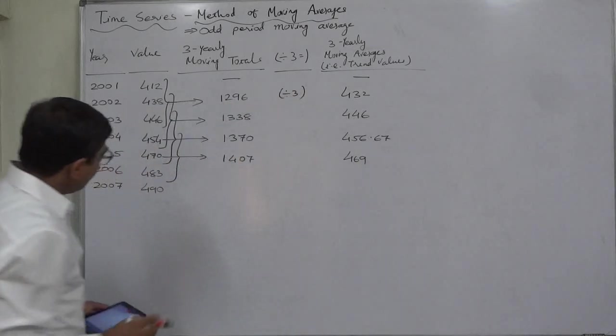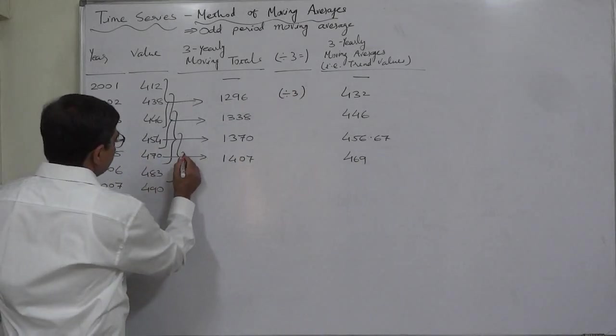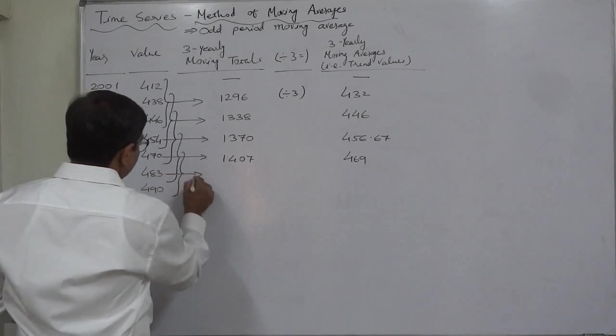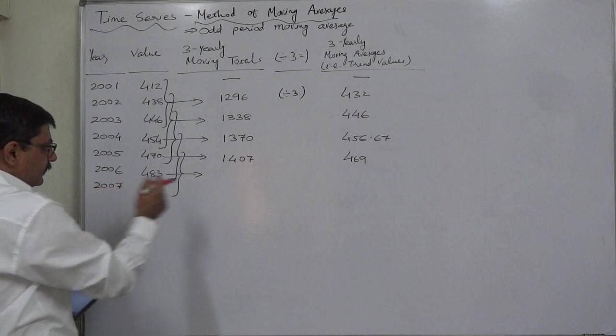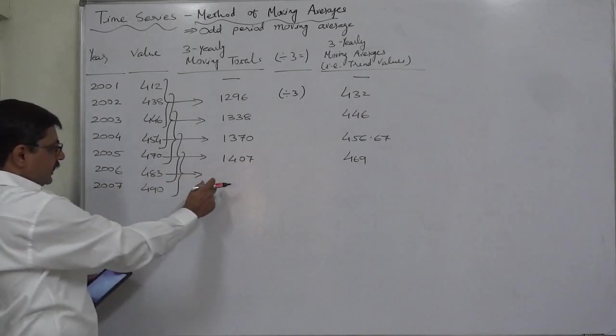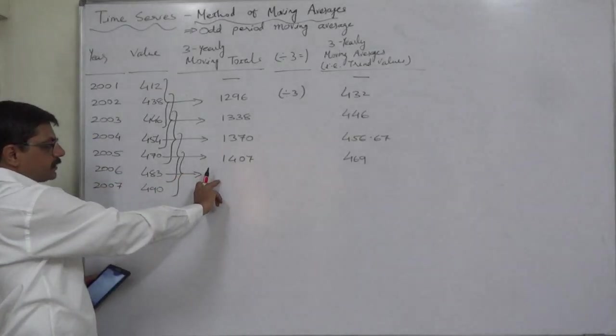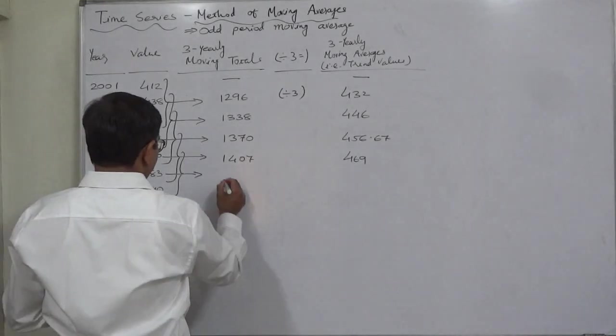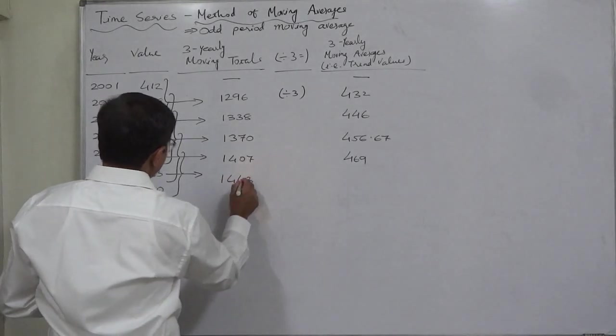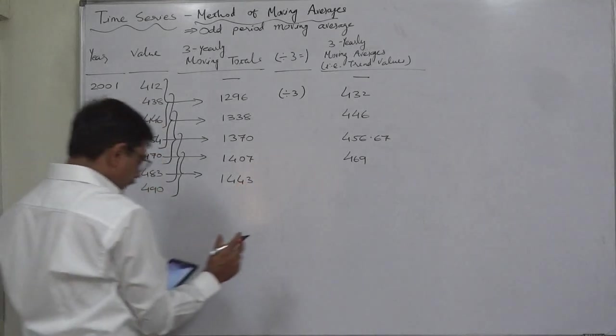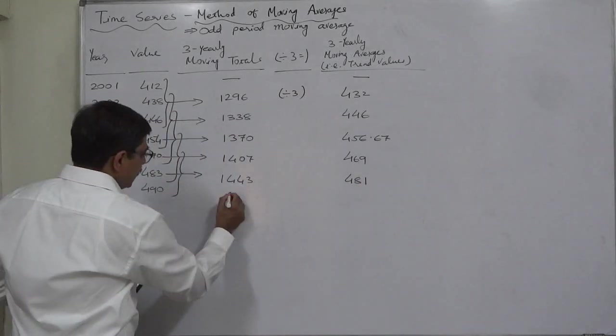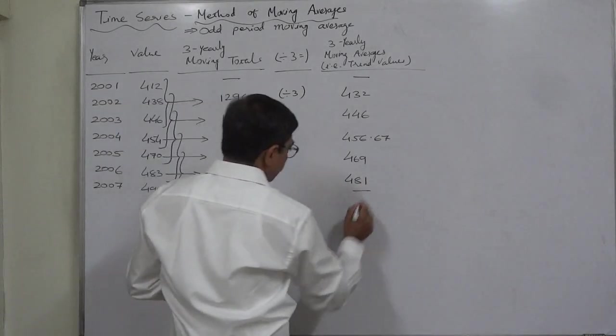And now there are only three values left, so this will be the last total and last moving average. Yes, because after this we will not be able to get the total of three. The total comes to 1443. Total of last three divided by three, it will be 481.